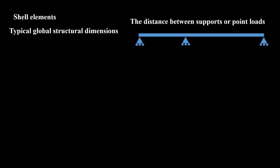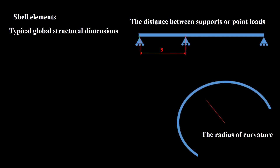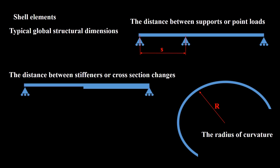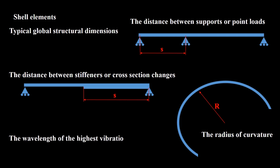Note that the two transverse shear components are zero only in thin shells; in thick shells these components are non-zero. What are typical structural dimensions? The most general dimensions to consider are the distance between supports or point loads. In curved structures like vessels and cylinders, we should take into account the radius of curvature and compare it with the thickness. The distance between stiffeners or gross cross-section changes is also a typical dimension. In acoustic or vibration analysis, the wavelength of the highest vibration mode is also considered.